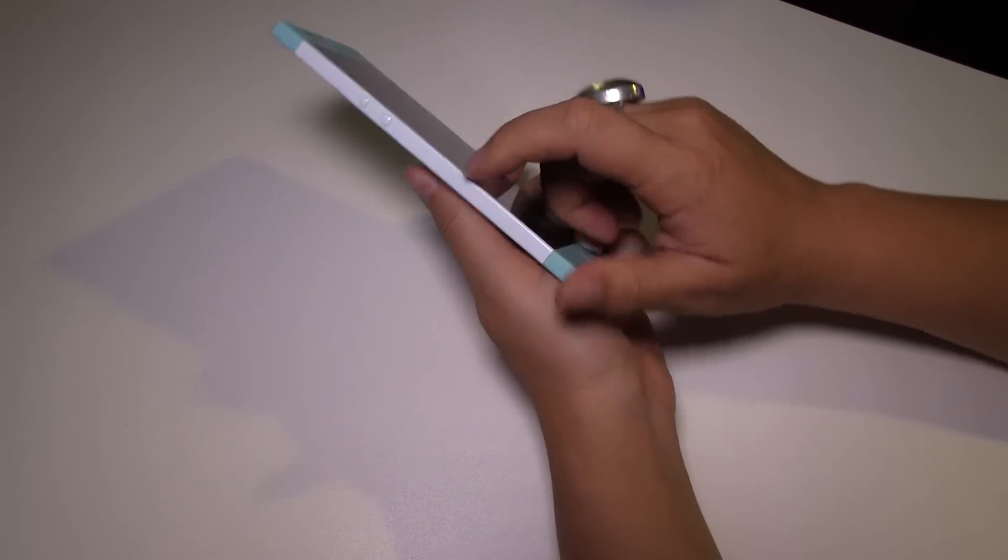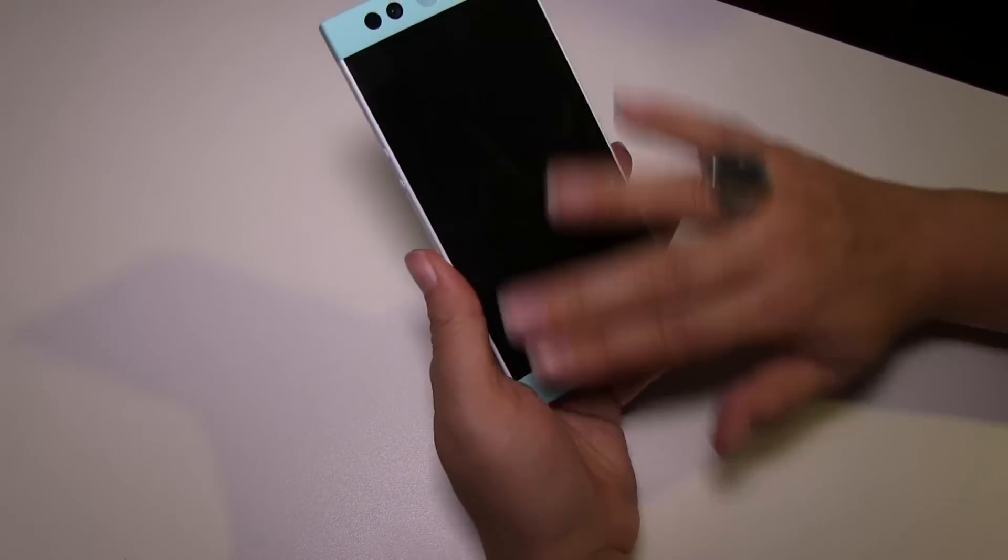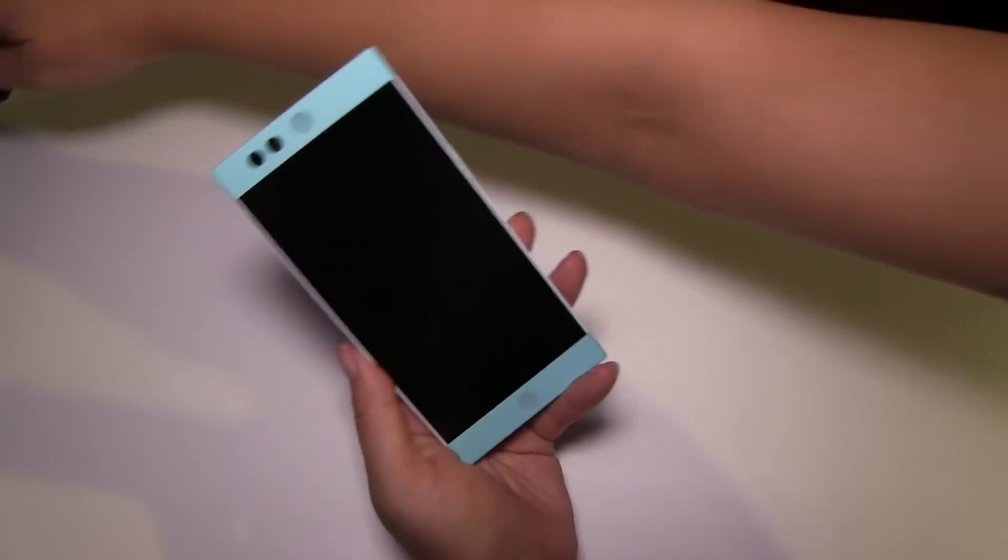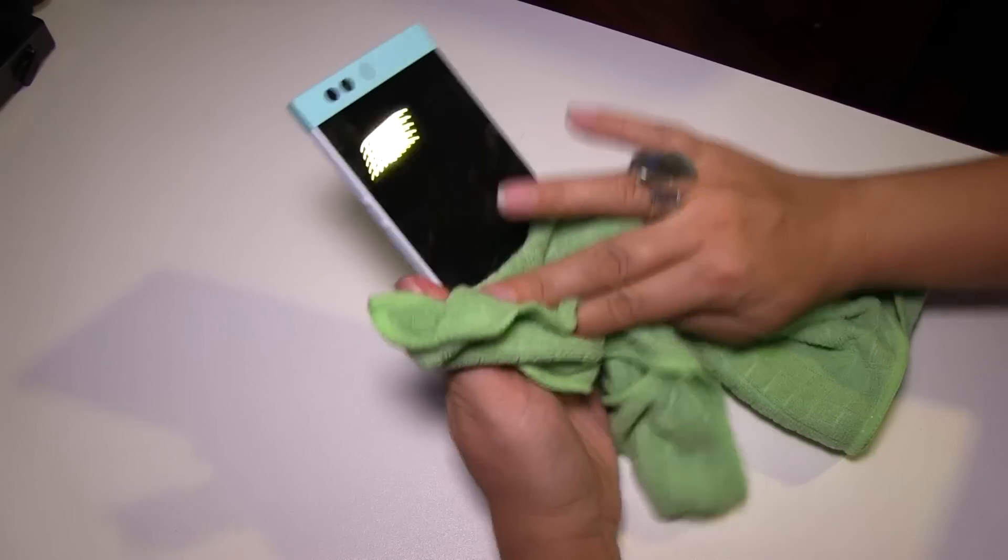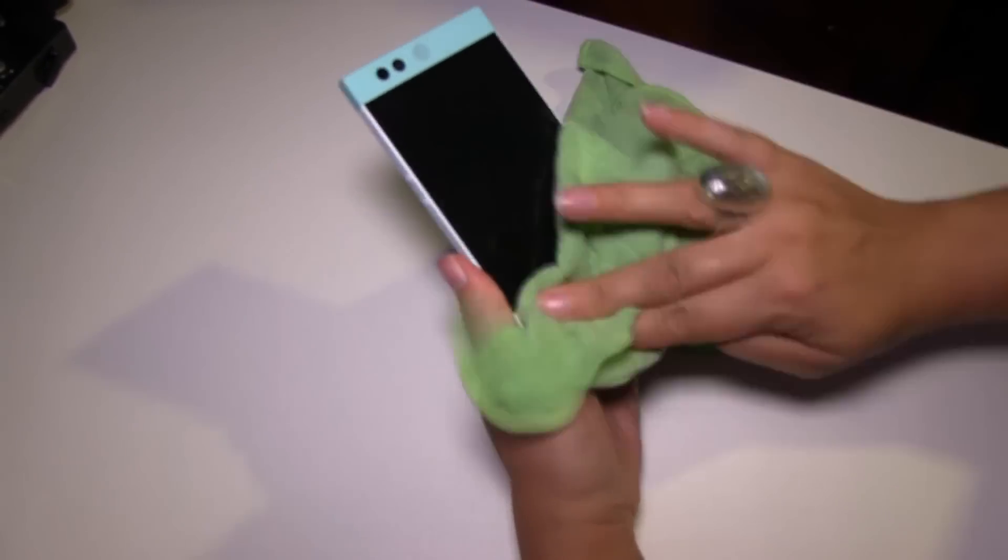So if we take a look around the system, we have two buttons here, kind of in a volume rocker kind of way. Around the front, we have a glass front. This is just a non-working prototype. I've got my fingerprints all over it here. Let's just take that all off.